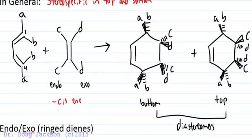Cis on the alkene, the dienophile here, stays cis on the ring. So the C's are on the same side, the D's are on the same side.